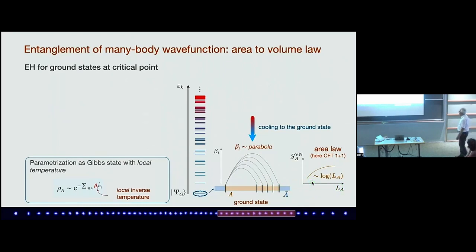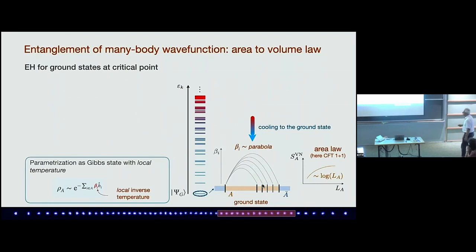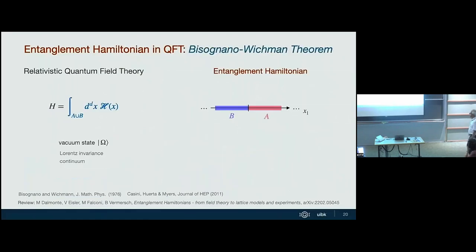In order to even start to ask these questions, you have to be able to do entanglement Hamiltonian tomography for relatively large system sizes. I will show results up to 18 — and Christian tells me he can now do up to about 22 — which I think is quite amazing. We want to look at the scaling with system size. This parametrization with a local inverse temperature is something I will now argue why it should happen, and this leads me to something I'm still amazed exists: the entanglement Hamiltonian in relativistic quantum field theories.